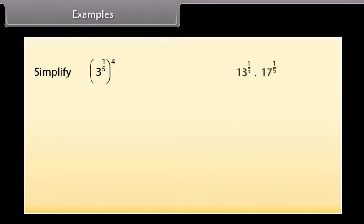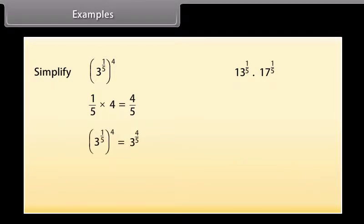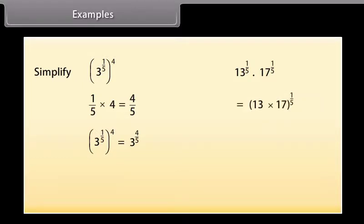Examples. Now let's solve some examples using these identities. Let's simplify: 3 raised to the power 1/5, whole raised to the power 4. By multiplying 1/5 by 4, we get 4/5. So the answer is 3 raised to the power 4/5. Now look at the second example: 13^(1/5) multiplied by 17^(1/5) equals (13 × 17) raised to the power 1/5, which is 221 raised to the power 1/5.